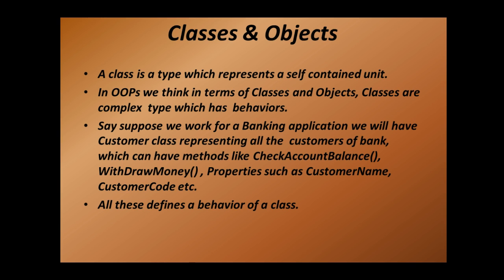The customer class can have methods like 'check account balance' and 'withdraw money'. A customer can check their account balance and withdraw money with the help of those methods. Customers will also have properties such as customer name and customer code. All these things define the behavior of a class. These points will be clear once we look at an example, so let's move to Visual Studio.